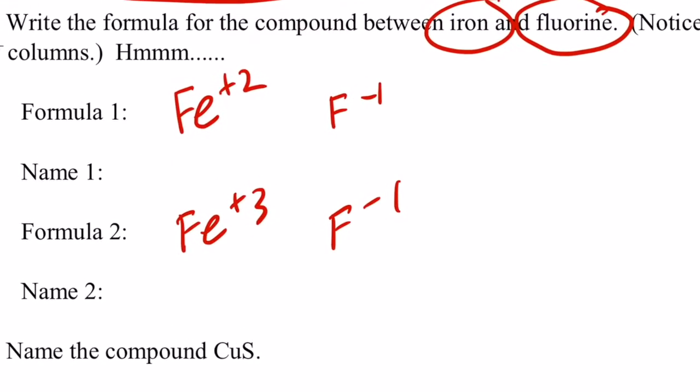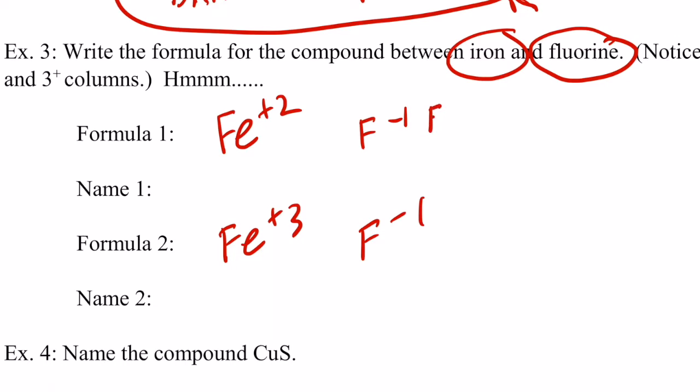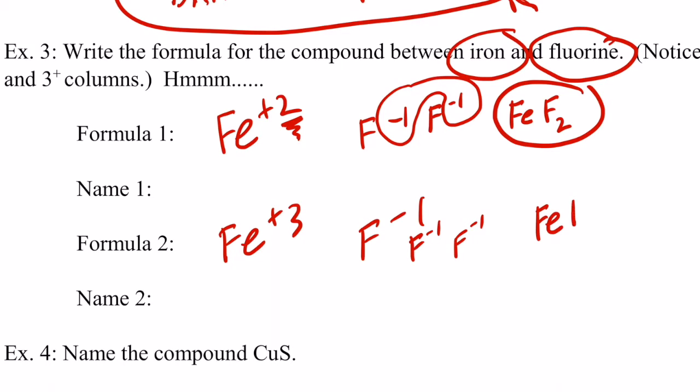Remember, fluorine in each case will be negative 1. So, let's write formula number 1. If iron is 2 positive and fluorine is 1 negative, won't the formula be FeF2? Won't the sum of the charge be zero if I have one of these irons with a 2 plus charge and two of these fluorides with each a negative 1 charge? Well, what do you think the formula would be when iron is 3 plus? We'd need three of these fluorines with a negative charge. So, we'd end up with FeF3. So, there are two possible formulas between iron and fluorine. It depends upon what the oxidation number is, what the charge of that iron atom is.